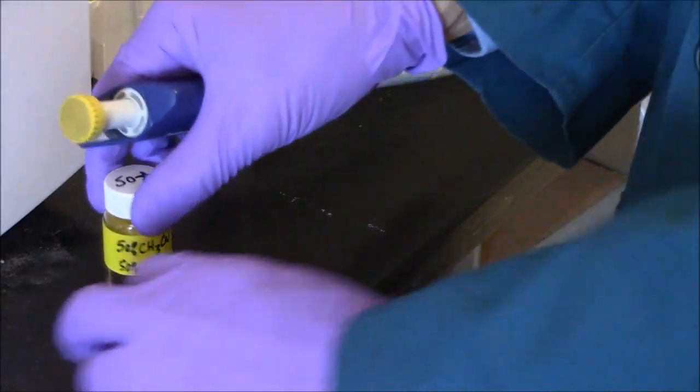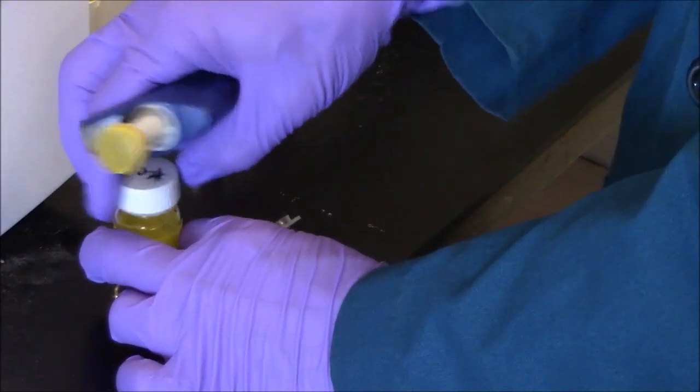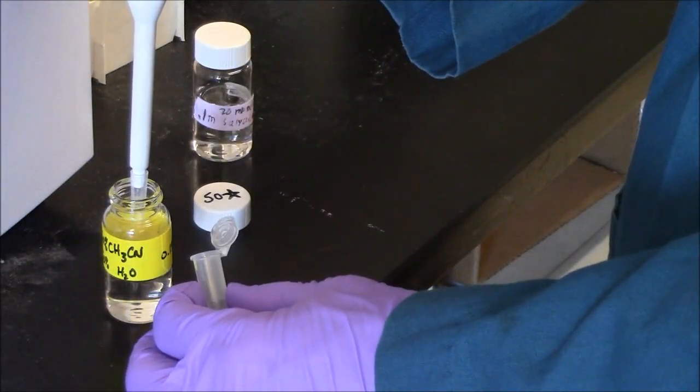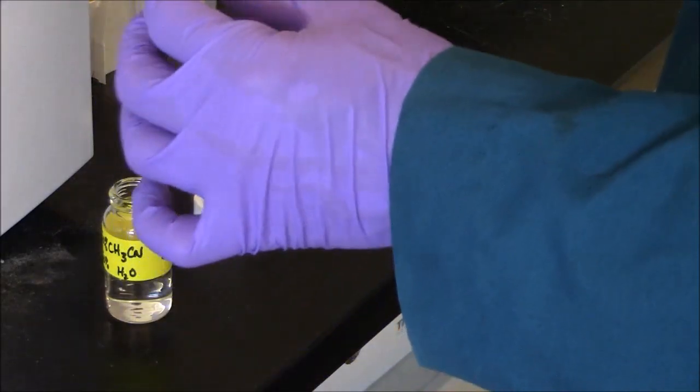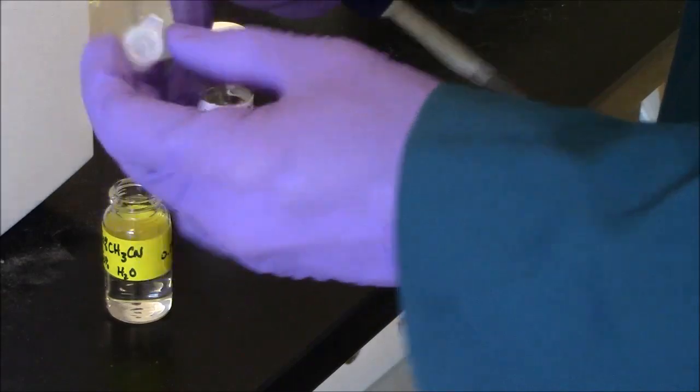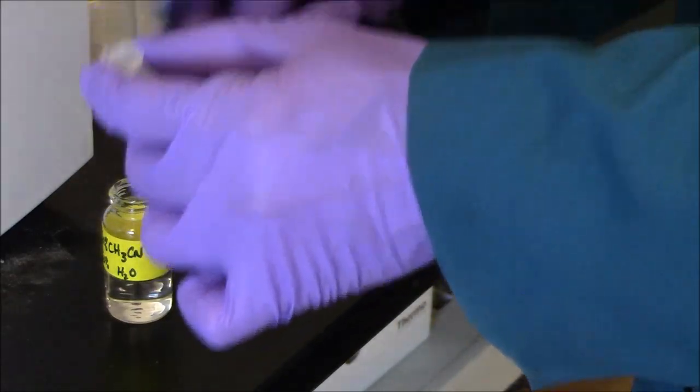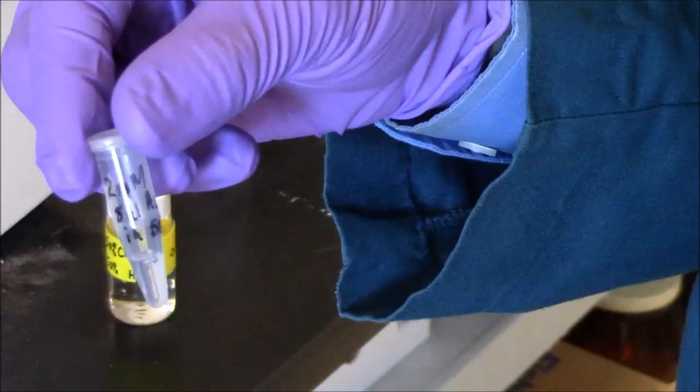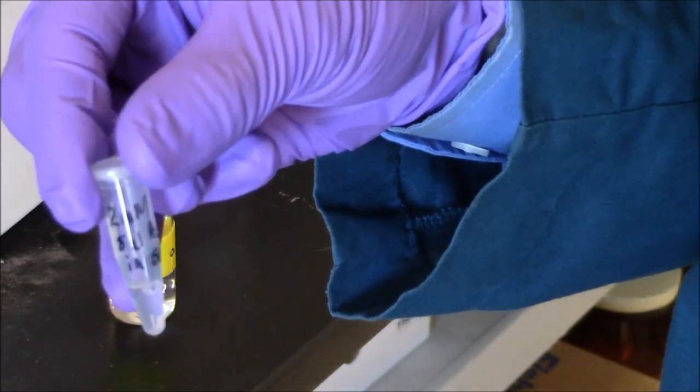So now I'll add 200 microliters of 50-star to my sample to dilute it appropriately for the HPLC. And I just agitate that gently. Here's my sample, ready for injection.